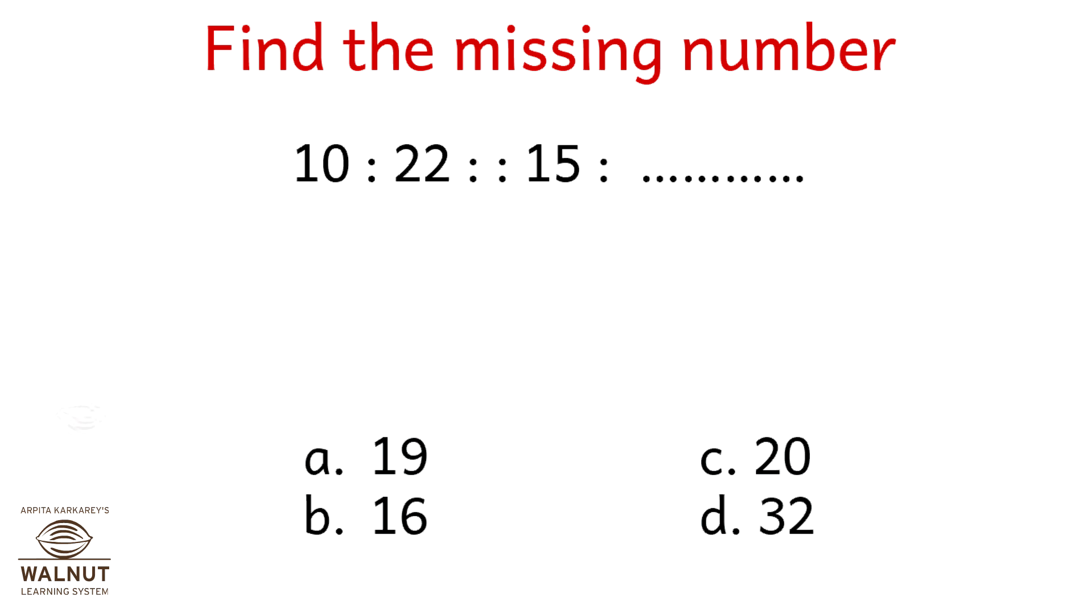Let's find the missing number here. 10 is to 22 as 15 is to what? 10 into 2 is 20, 20 plus 2 is 22. Now 15 into 2 is 30, 30 plus 2 is 32. Do we have the option here 32? Yep, option number 4.